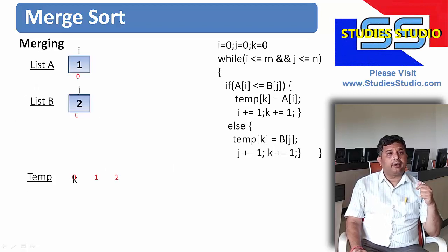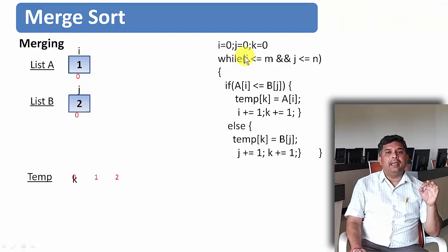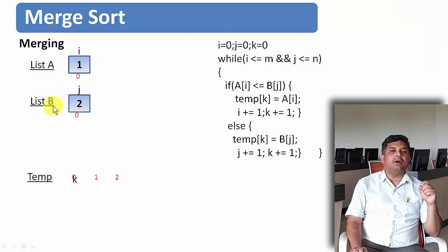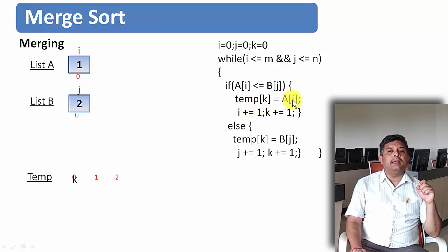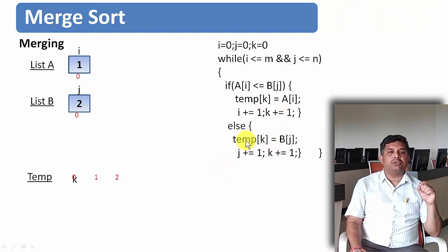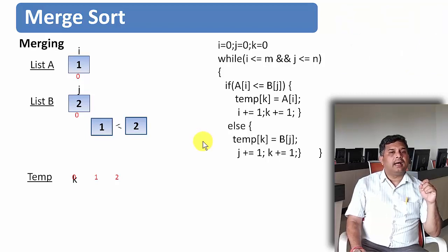Now let us see the basic merge algorithm. For list A with index variable i and list B with index variable j, while i is less than m and j is less than n: if A[i] is less than or equal to B[j], copy A[i] into the temp array at position k, then increment i and k. Otherwise copy B[j] into temp at position k, then increment j and k. We compare the i-th and j-th location data and write whichever is smaller into temp.